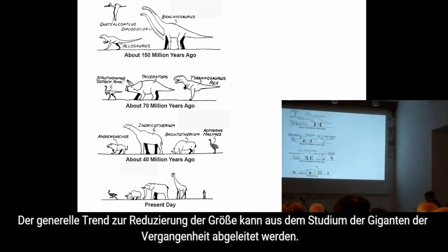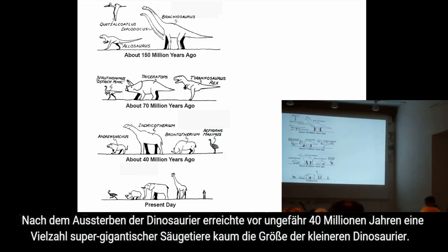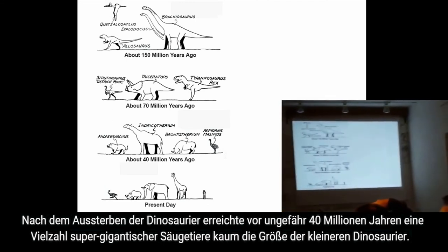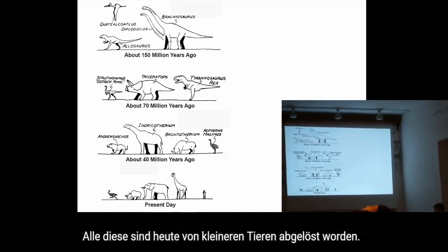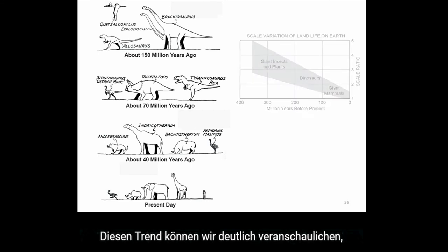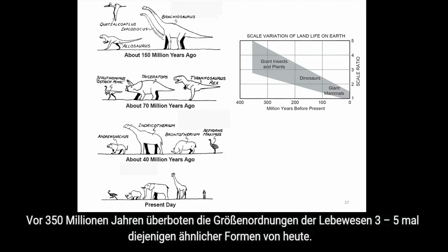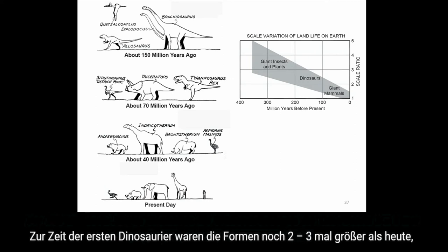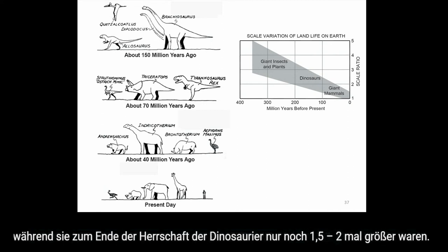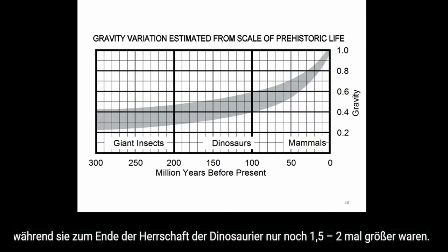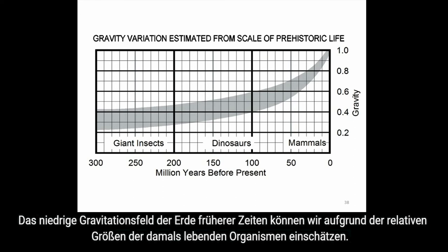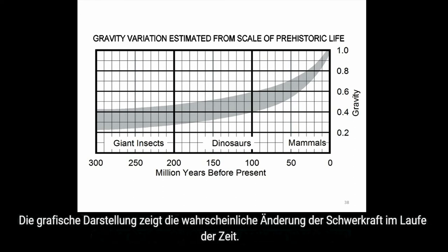The general trend of scale reduction is noticeable from the observation of giants of the past. After the dinosaurs became extinct, a range of supergiant mammals reached the size of smaller dinosaurs about 40 million years ago, but these have all been replaced by the smaller animals of today. Plotting the relative sizes of giants of ancient times compared to modern life forms shows that 350 million years ago, the scale of life was 3 to 5 times greater than similar forms today; by the time of the first dinosaurs, this had reduced to 3 to 2 times; and at the end of the dinosaurs' reign, it was 1.5 to 2 times the scale of present-day life.